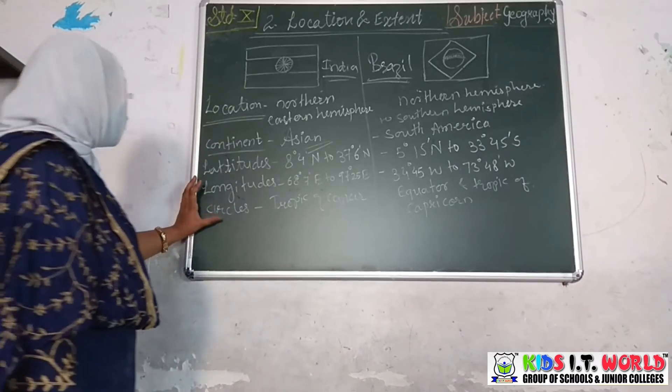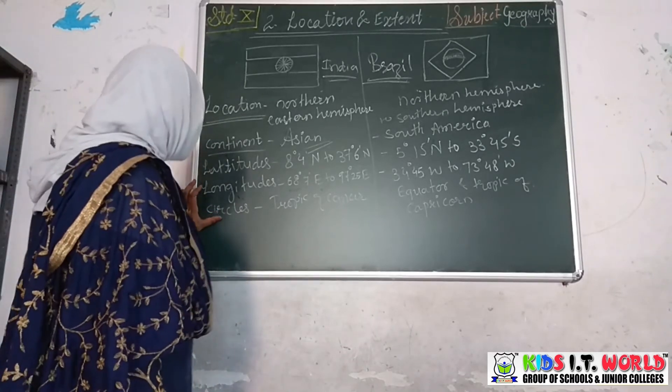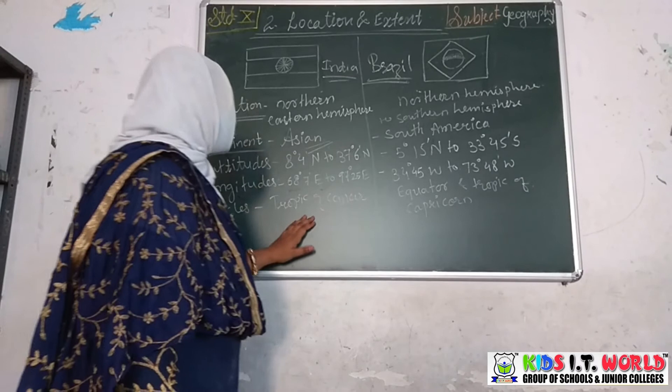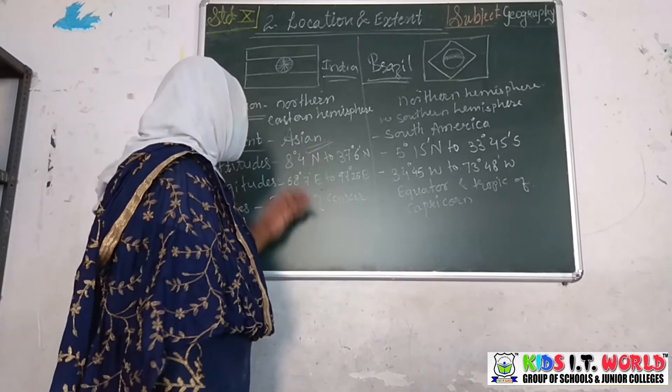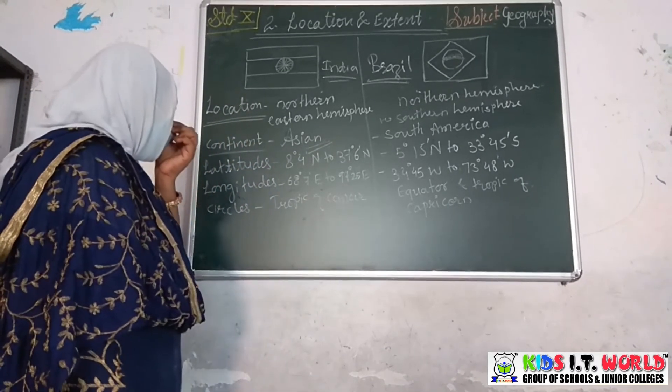The latitudinal circle which passes through India is the Tropic of Cancer — it passes through India.